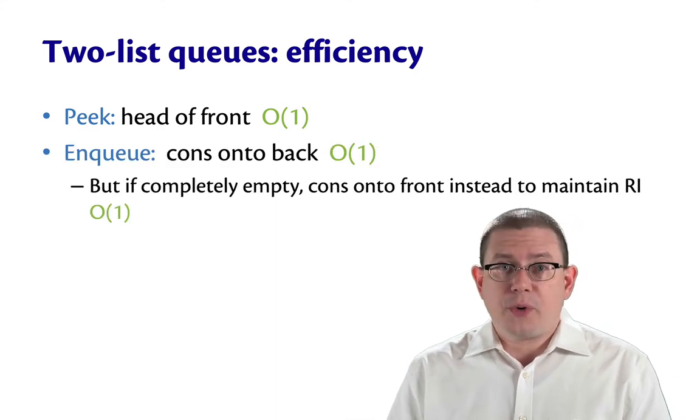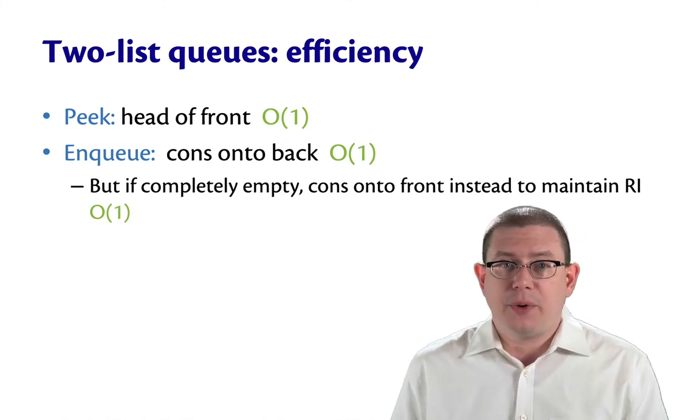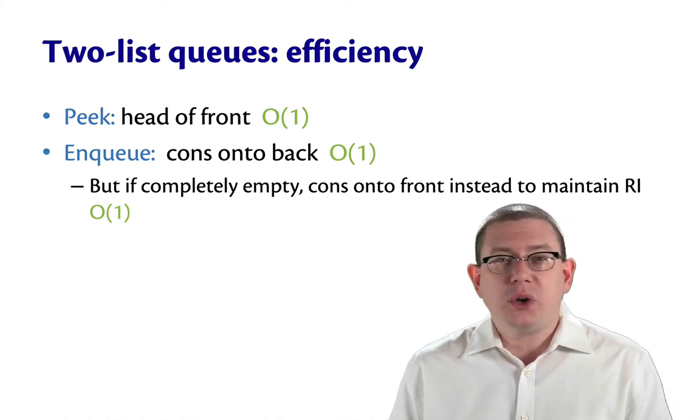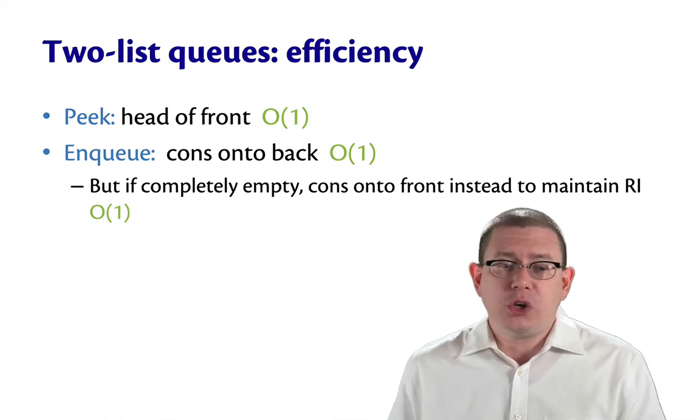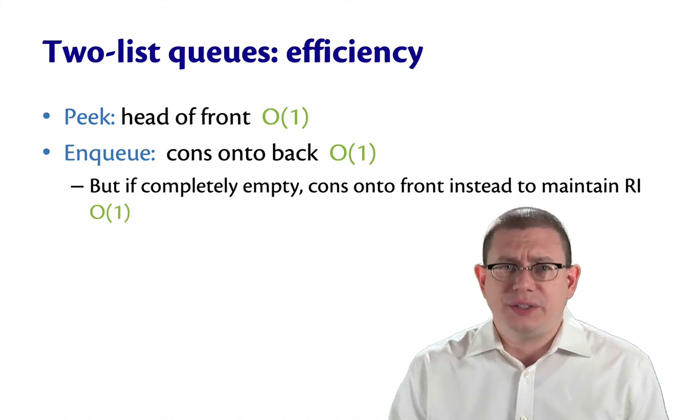For the enqueue operation, we always cons onto the back list. So cons is a constant time operation. There's one tricky little case there, which is if the entire queue were empty, then we would cons onto the front instead to maintain the rep invariant. But that's still constant.